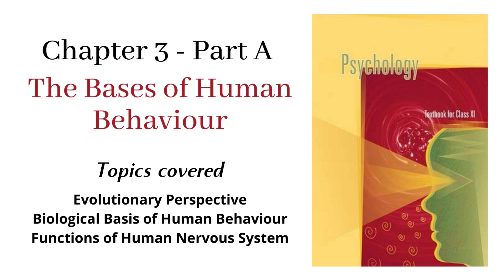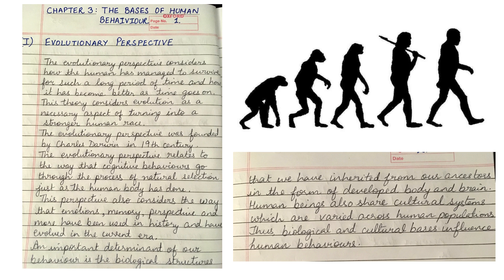Chapter 3 Part A: The Basis of Human Behavior. The evolutionary perspective considers how the human has managed to survive for such a long period of time and how it has become better as time goes on. This theory considers evolution as a necessary aspect of turning into a stronger human race.